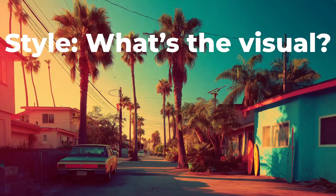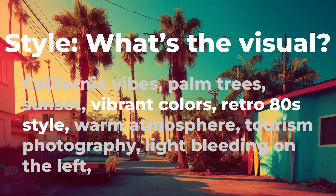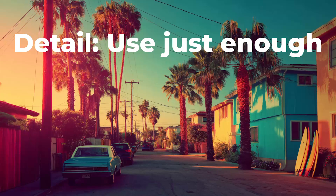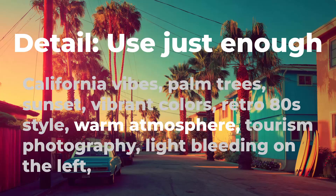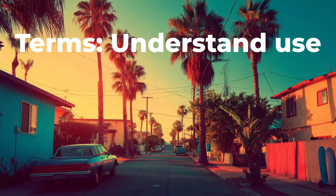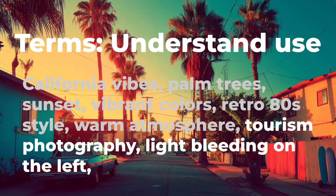Next up is style — what is the visual vibe? Same prompt: vibrant colors, retro 80's style. Then let's add just enough detail to make something matter; here it's just warm atmosphere. And finally, let's add some terms, but you've got to make sure you know what they do. Here we're adding tourism photography and light bleeding.